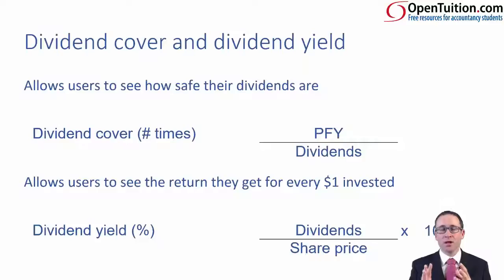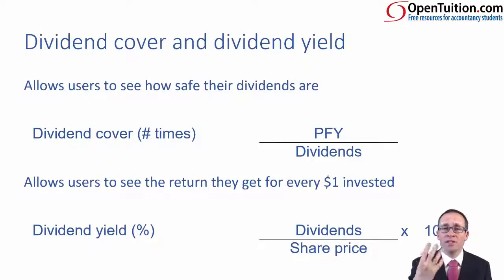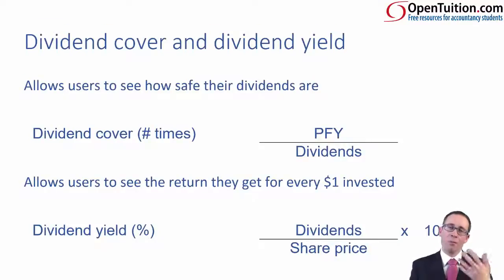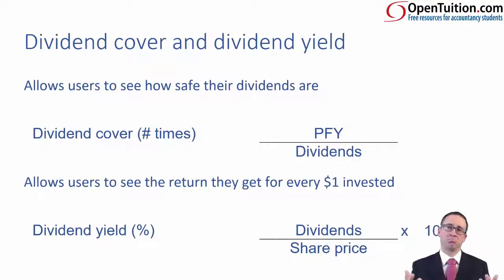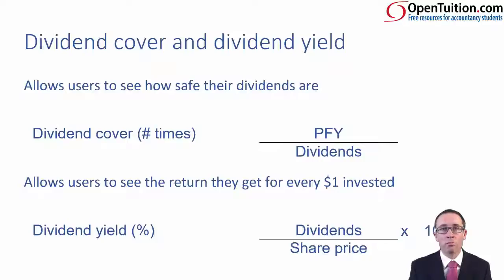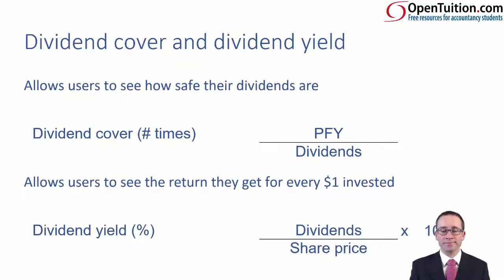The reason is that dividend yield just looks at the return on your dividend — it ignores any capital growth. You could have a dividend yield of, say, half a percent, so you get half a cent for every dollar invested. Not that much really — you get more by putting your money in the bank and getting an interest return. But even though we've got a half percent dividend yield, if the share price has doubled, that might make you think again. The dividend yield ignores capital growth, so it's really only good for looking at things this year.